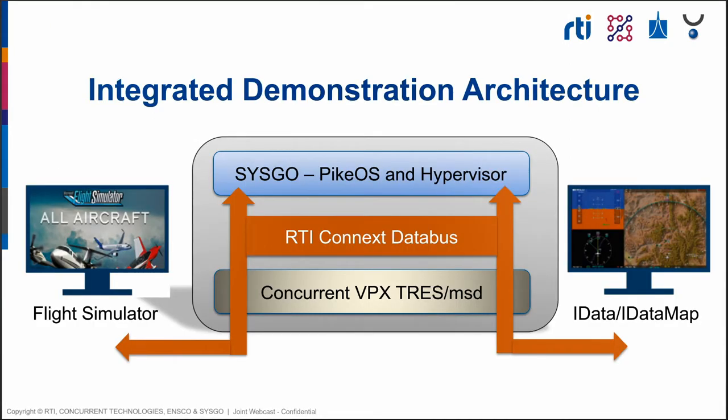Now Chip will be going over the demo architecture. Today you're going to see a very interesting integration of technologies. We're going to start out with a Concurrent Technologies Intel-based board underpinning all the technology. On top of that will be the Cisco PikeOS and Hypervisor. On top of that will be the RTI Connex data bus, which will feed both Microsoft Flight Simulator and the ENSCO iDataMap technologies — showing how you build up an avionics environment using commercial off-the-shelf technology.